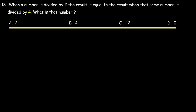When a number is divided by 2, the result is equal to the result when the same number is divided by 4. What is that number? Options: 1, 2, 3, or 4?